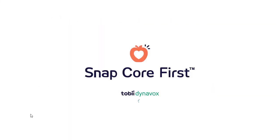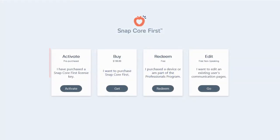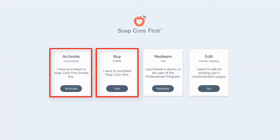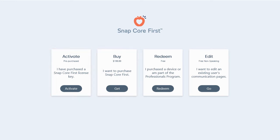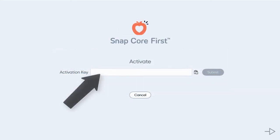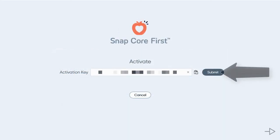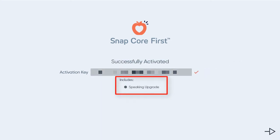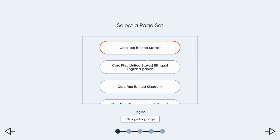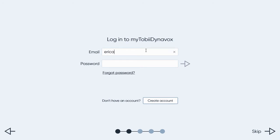Once you download and start the communication software, either select the Activate or Buy option. If you have already purchased Snapcore First and were given an activation or license key, select Activate. Input your key and select Submit. Confirm the features within your license, and complete the steps of the Setup Wizard for your communicator.